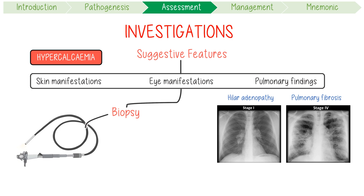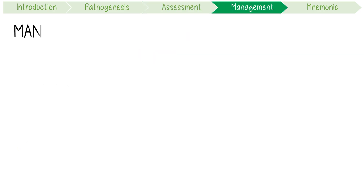A biopsy is usually done via bronchoscopy. If the biopsy is negative and alternative diagnoses don't have supporting evidence, you should consider three diagnostically supportive tests: one, a serum ACE level which would be elevated; two, a PET scan which would be positive in multiple organs; and three, a bronchoalveolar lavage.